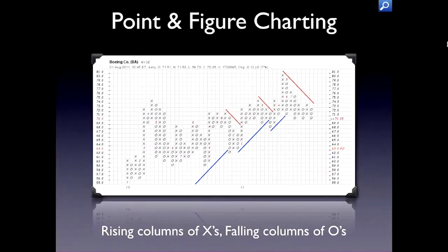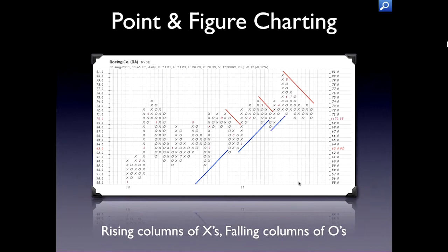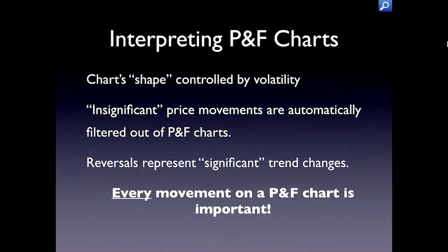Point and figure charts have a rising column of X's and a falling column of O's. As prices move up, you don't go to the side — instead you go higher and add more X's to the column. As prices reverse and go down, you add O's, and when they reverse again you add more X's, and so on. This chart only expands to the right as volatility requires it to — the vertical scale is not necessarily the same distance as time goes on.